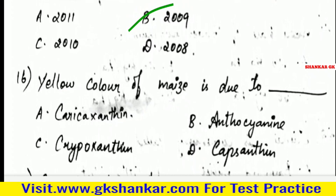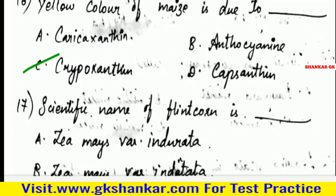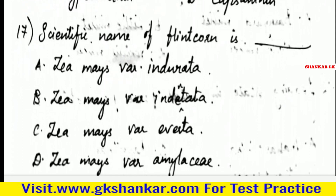Sixteenth question: Yellow color of maize is due to — A. Caricoxanthin, B. Anthocyanin, C. Cryptoxanthin, D. Capsanthin. Answer: C. Cryptoxanthin.